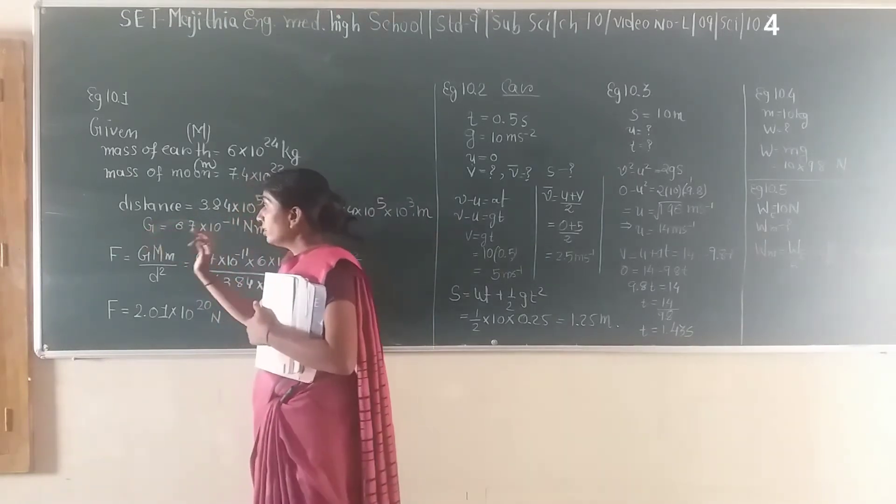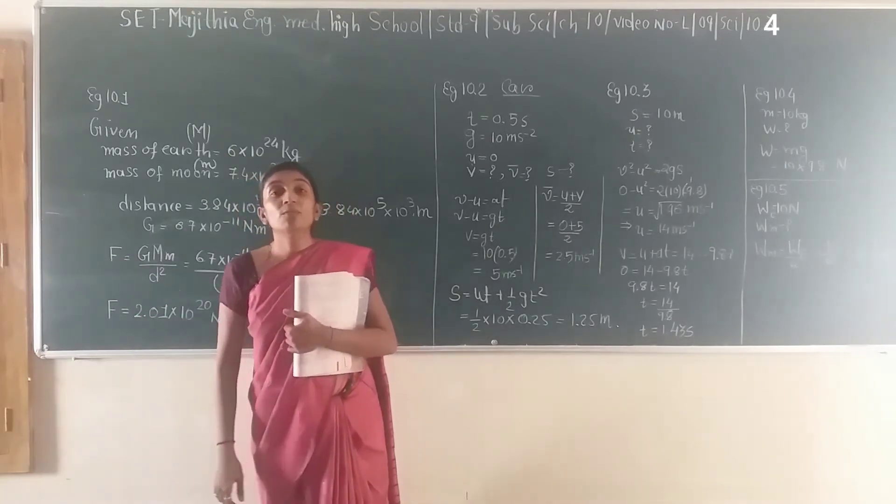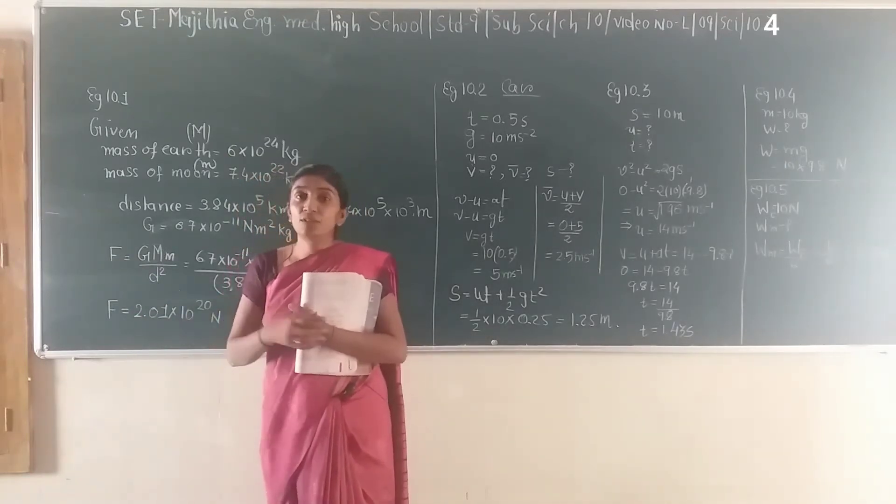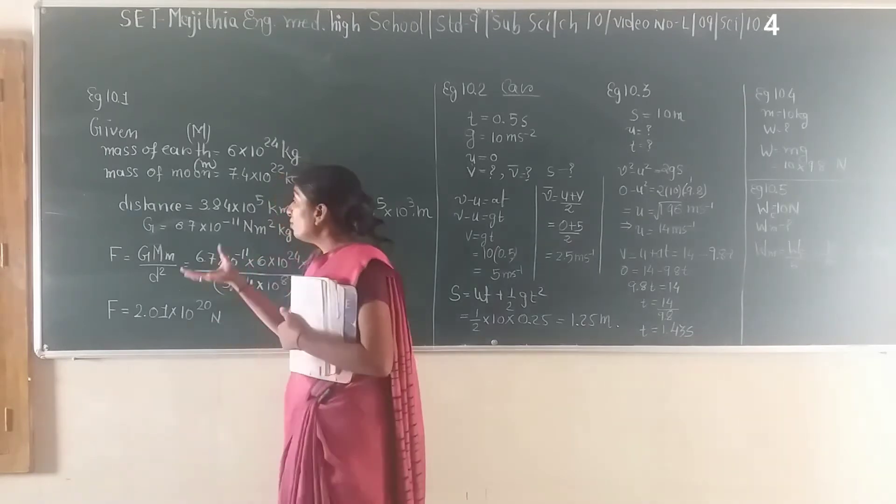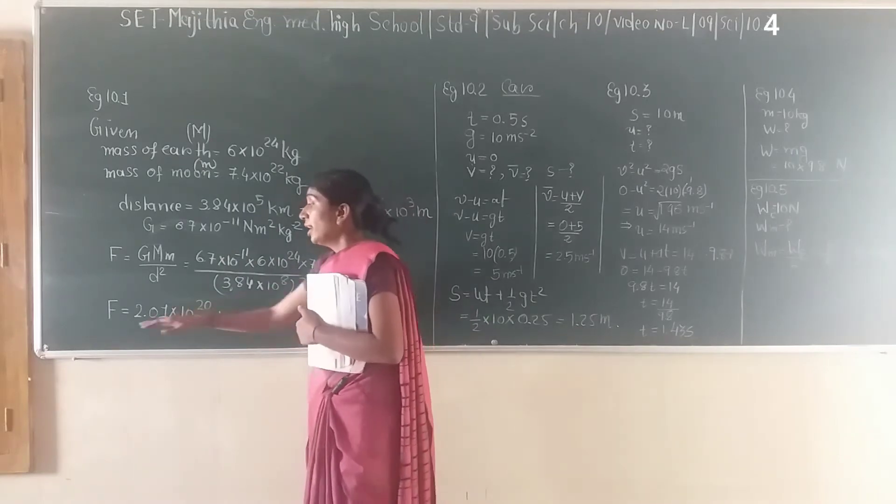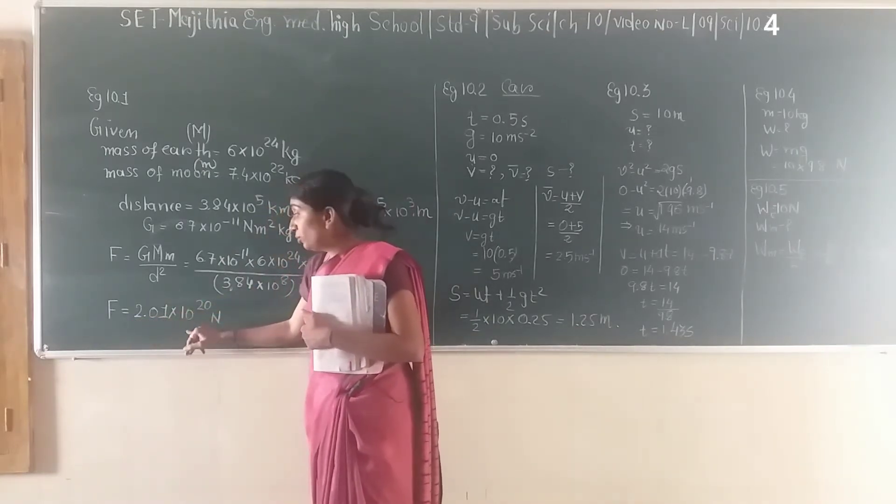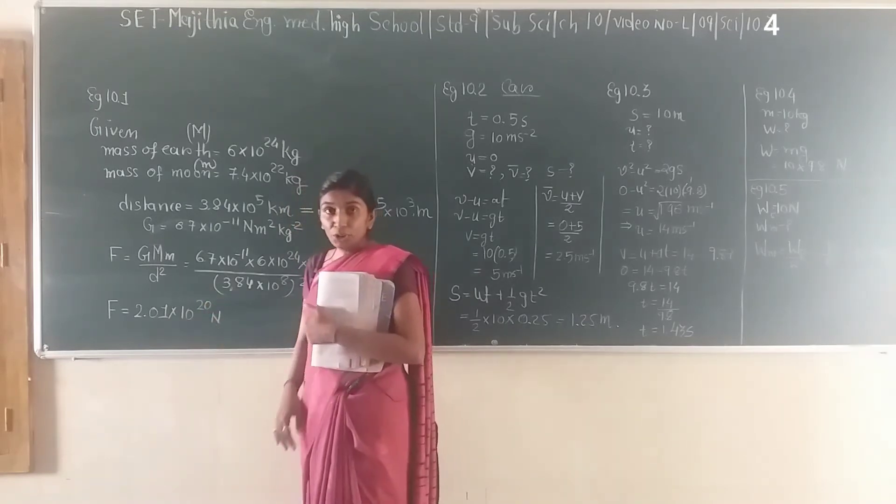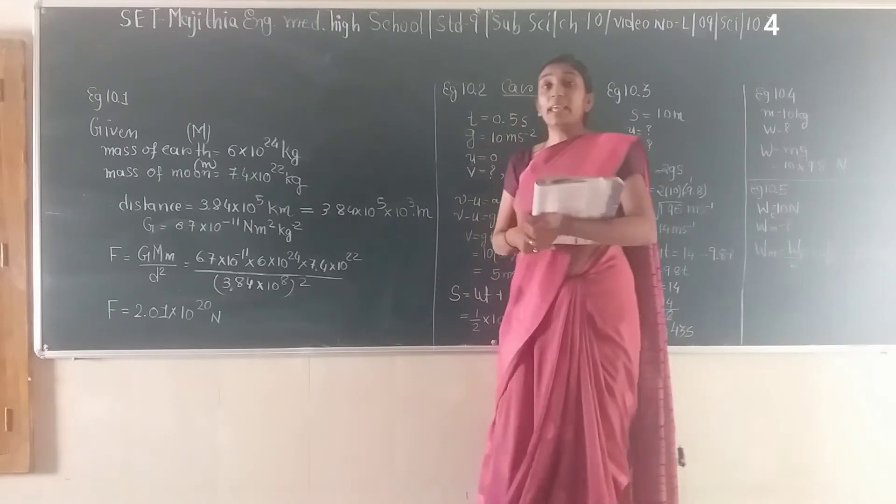G is given. The formula is F = G × M₁ × M₂ / d², where d is the distance between them. We know all these quantities, so we'll substitute and get the answer: F = 2.01 × 10²⁰ Newtons.